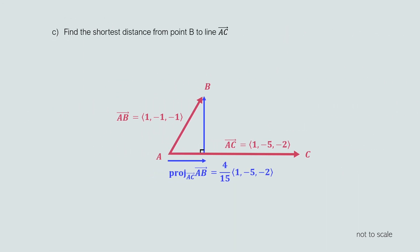Now let's move on to part (c), which requires us to find the shortest distance from point B to the line AC. We draw a perpendicular line from point B to line AC, since the shortest distance from a point to a line is always the perpendicular path. Looking at the diagram, this perpendicular path is the vector rejection of AB from AC. Let vector d be the vector rejection of AB from AC, so vector d equals vector AB minus the projection of AB onto AC.